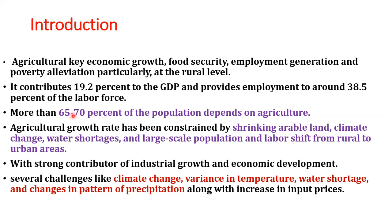Agriculture sector contributes 19.2 percent to the total national income or Gross Domestic Product — the GDP — and almost 38.5 percent of the labor force is employed by the agriculture sector. People work in farmhouses, they raise animals, and some collect vegetables and medicinal herbs. About 65 to 70 percent of the population in Pakistan depends on agriculture.